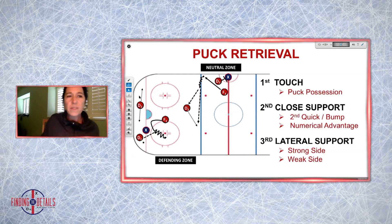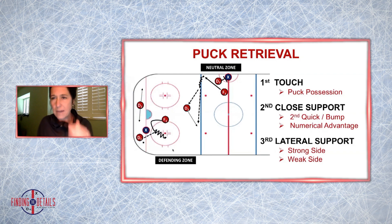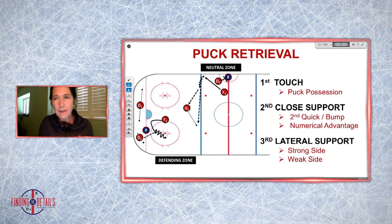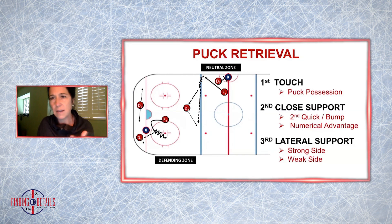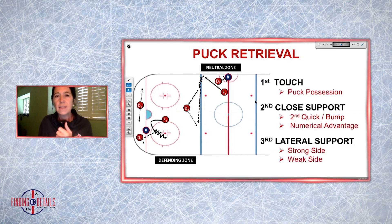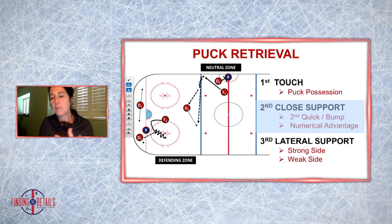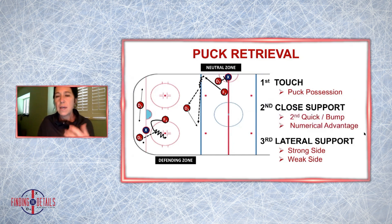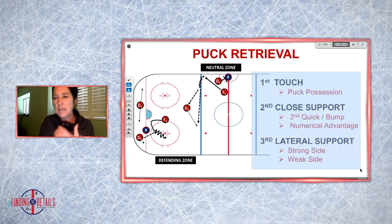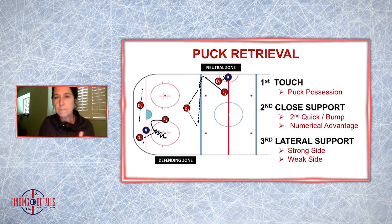What's important is that all of these positions are interchangeable. It doesn't always have to be D1 going back for a puck — it could be D2 creating the first touch. It doesn't always have to be your F3 creating the second close support — it could be your D2. These three things are interchangeable, and that's really important. So now that we've covered some structure...